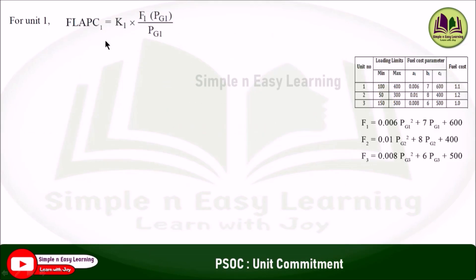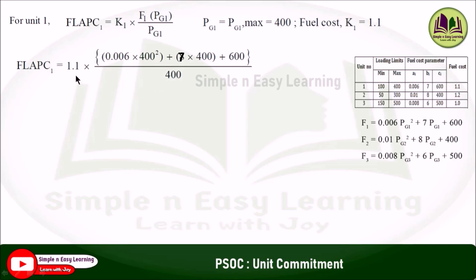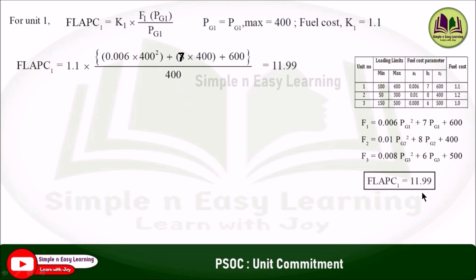For unit 1, FLAPC1 = K1 × F1(PG1) / PG1. K1 is the fuel cost equal to 1.1, and PG1 max is 400. Substituting: 1.1 × (0.006 × 400² + 7 × 400 + 600) / 400 = 11.99. Therefore, FLAPC1 = 11.99.